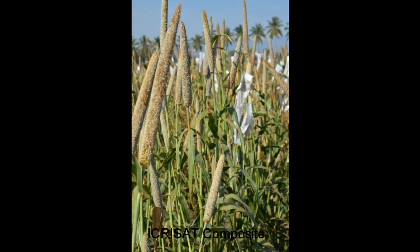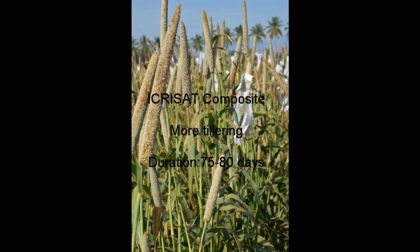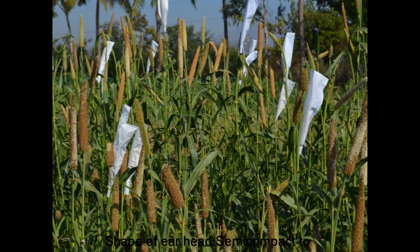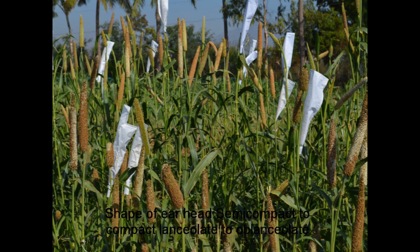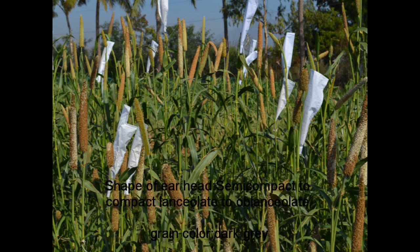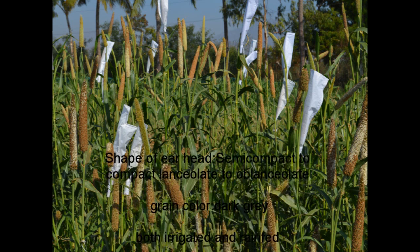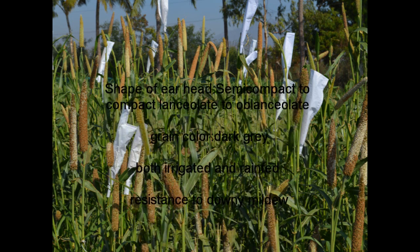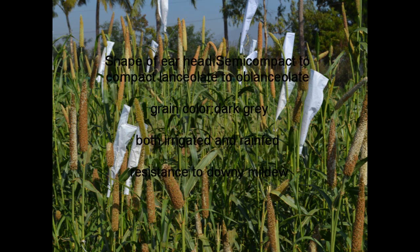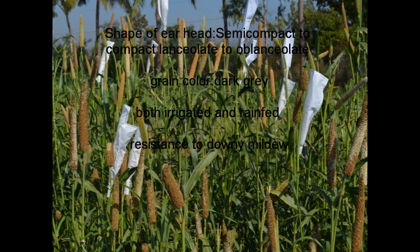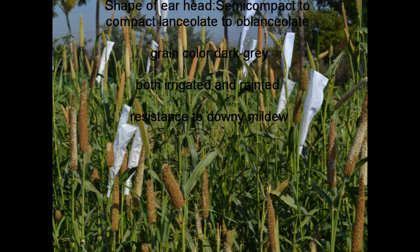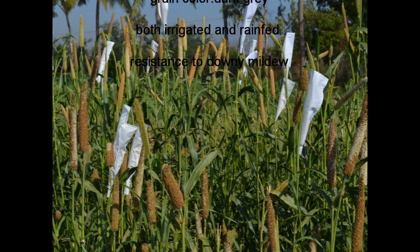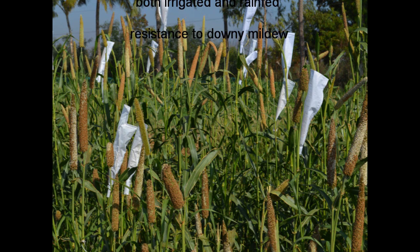ICMV221 is an ICRISAT composite with more tillers. The duration is about 75 to 80 days. The shape of the ear head is semi-compact to compact, lanceolate to oblanceolate. The grain color is dark grey. It is suitable for both irrigated and rain-fed conditions and is resistant to downy mildew.